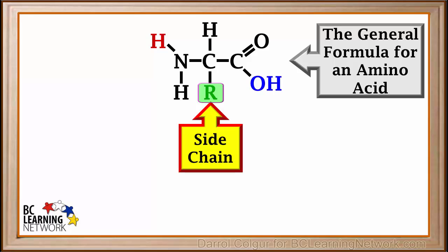The R group in this general formula represents various side chains that can be attached to the central carbon atom. There are 21 amino acids used in our body, which means there are 21 different side chains that can be represented by R.